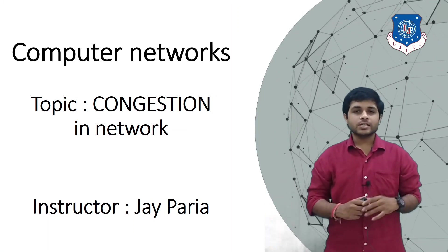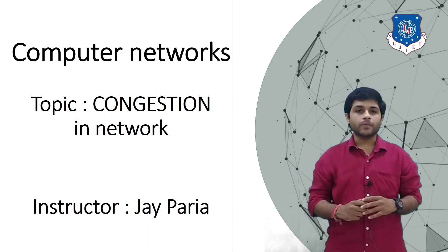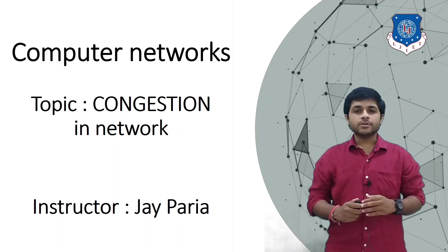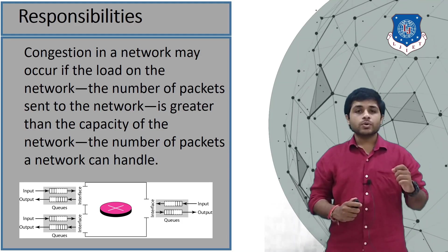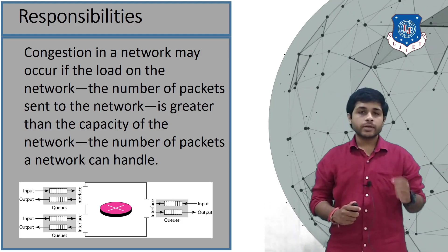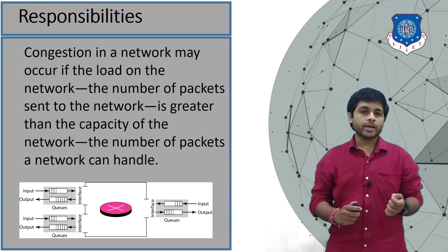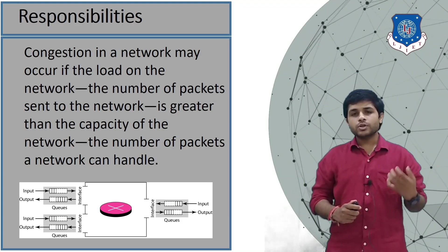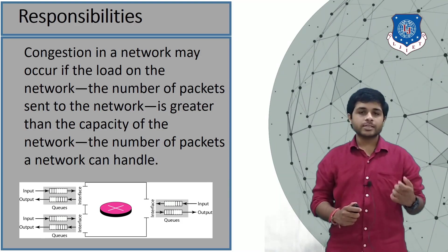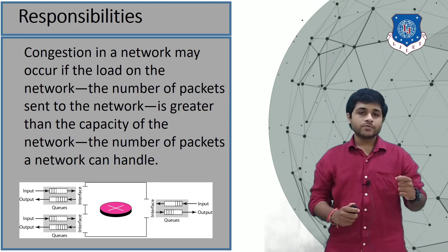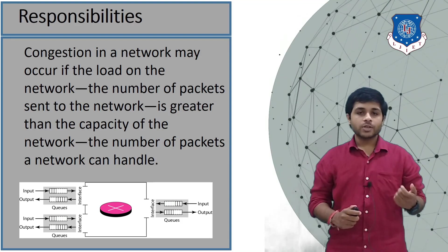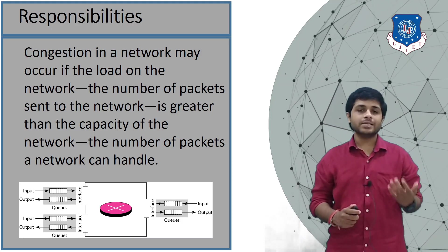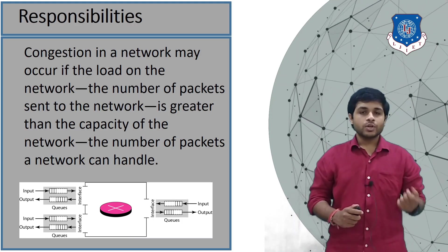Hi everyone, this is Jay, your instructor for computer networks. In this session we will discuss congestion in the network. Congestion occurs when the number of packets sent to the network is greater than the capacity of the network. For example, if your computer is sending 10 packets per second on a link that can only transfer five packets per second, the link will be congested very soon and remaining packets will be discarded.